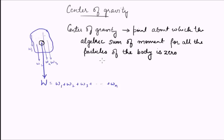Why does it have to be like this? If the moment about that point were not zero, the body would be in a state of continuous rotation even when placed at some location, since the whole weight is acting there — which is not the real scenario. So the location can be found using the condition that the algebraic sum of moments is zero.